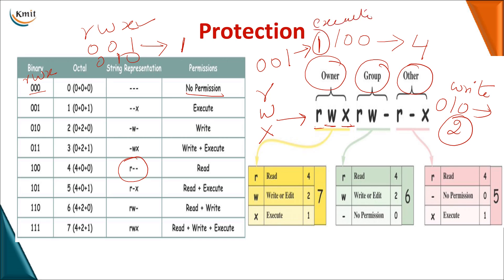For a particular owner, if you want to give all three operations — read, write, and execute — the decimal values are 4 for read, 2 for write, and 1 for execute. When you sum these up, you get 7. So representing the value 7 against the owner means the owner can perform read, write, and execute operations.